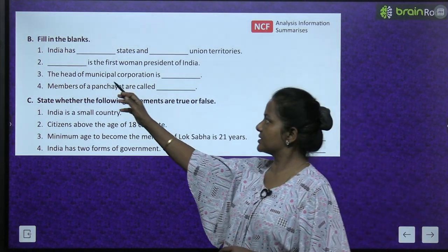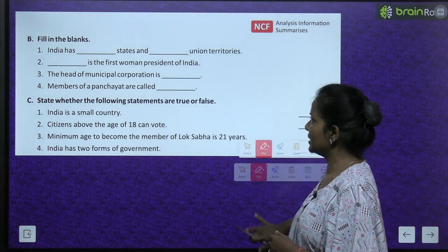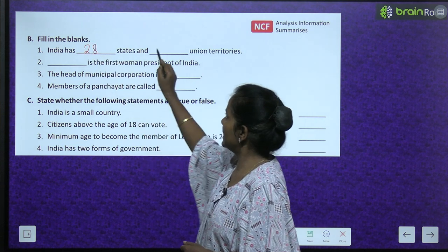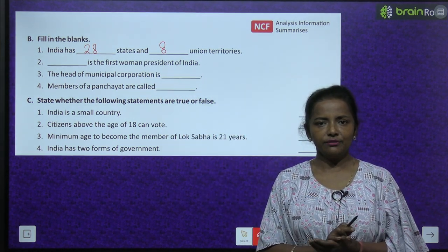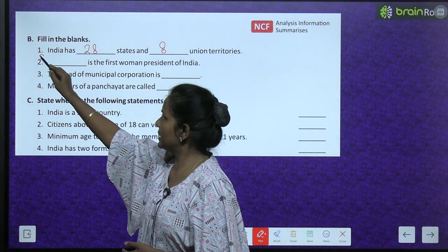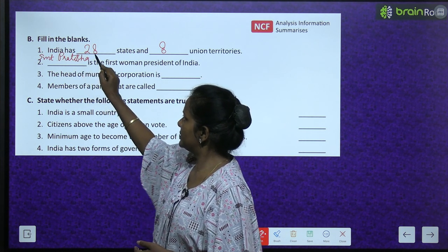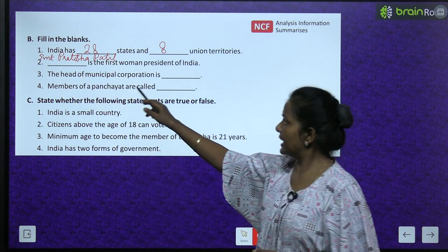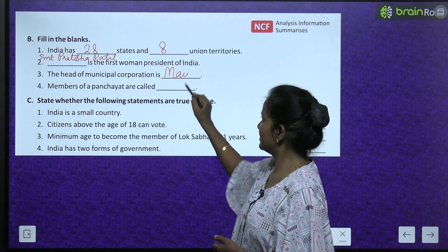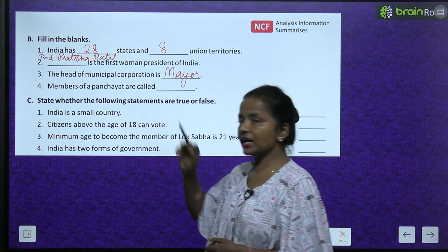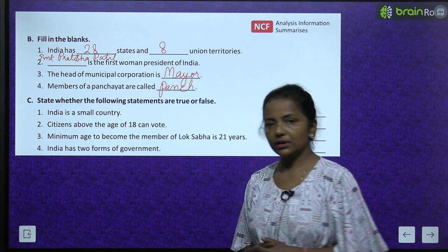Now let's do the fill in the blanks. India has 28 states and 8 union territories. Who is the first woman president of India? Shreemati Pratibha Patil. The head of the municipal corporation is the Mayor. Members of a panchayat are called Panchs.